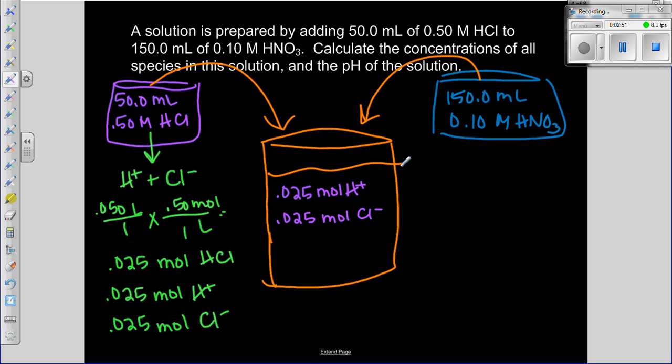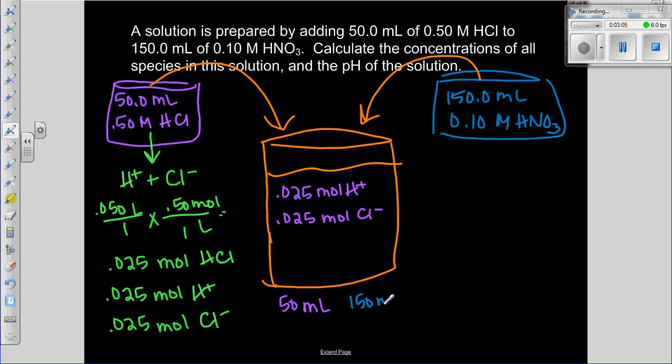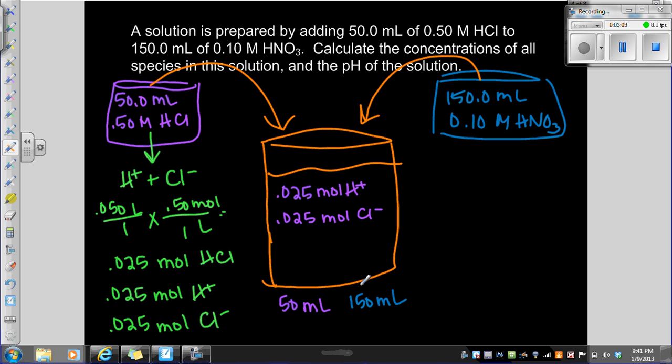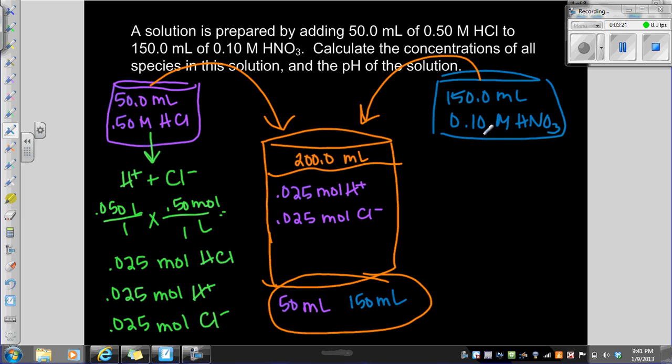So 50 milliliters of it came from this first acid. Now 150 milliliters came from this second acid, so these two together our new solution is 200 milliliters total.